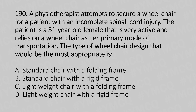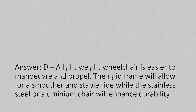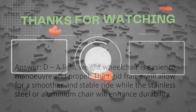Now let's move to question number 190. A physiotherapist is attempting to secure a wheelchair for a patient with an incomplete spinal cord injury. The patient is a 31-year-old female who is very active and relies on the wheelchair as her primary mode of transportation. The most appropriate type of wheelchair design is: Option A: standard chair with folding frame, Option B: standard chair with rigid frame, Option C: lightweight chair with folding frame, Option D: lightweight chair with rigid frame. The answer is Option D: lightweight chair with rigid frame, which will allow for a smoother and more stable ride, while the aluminum frame will enhance durability.